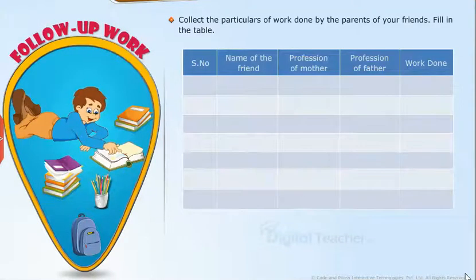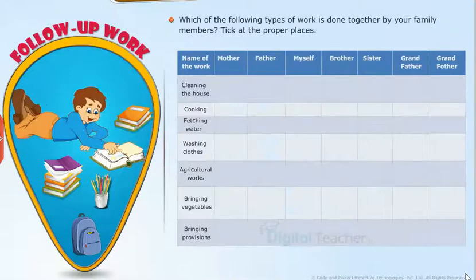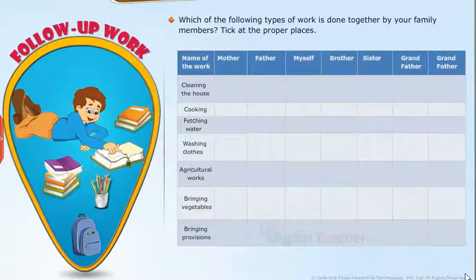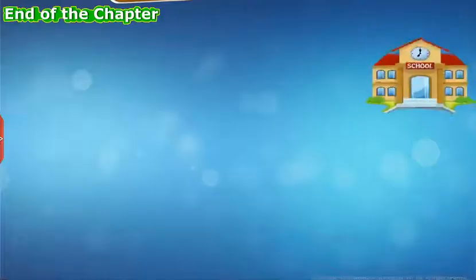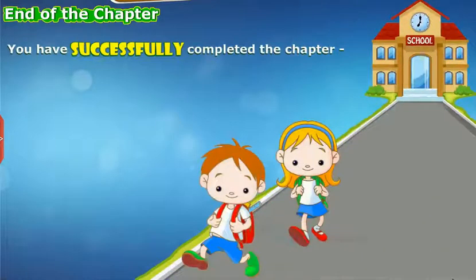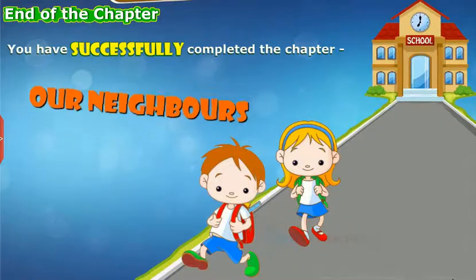Collect the particulars of work done by the parents of your friends. Fill in the table. Which of the following types of work is done together by your family members? Tick at the proper places. Test your understanding of the lesson by taking the mock unit test. You have successfully completed the chapter, Our Neighbours.